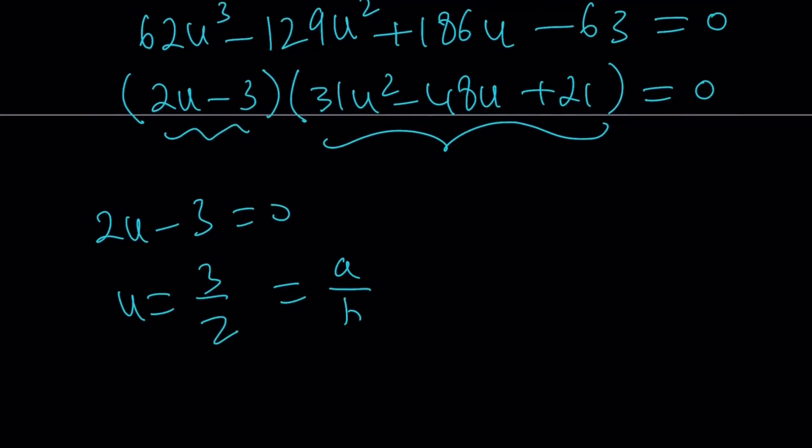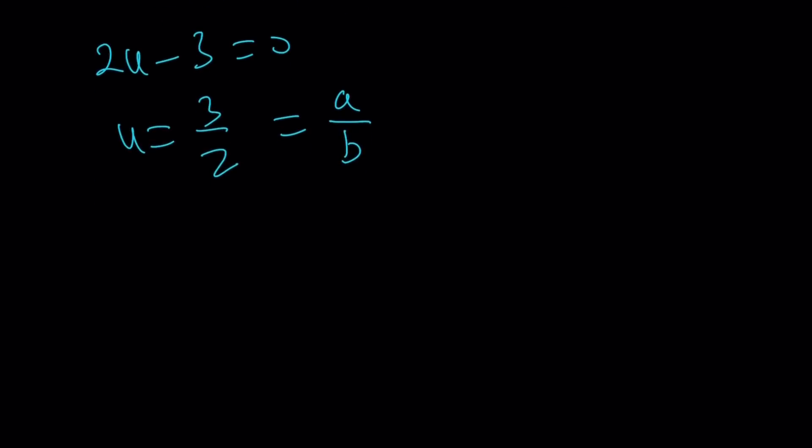And remember, three halves is the same as A over B. And if you go ahead and, well, you don't need to do anything because we were looking for A over B. And we got the answer, which is three halves. And this brings us to the end of this video.